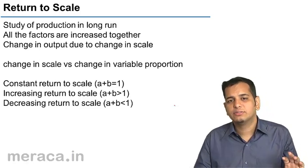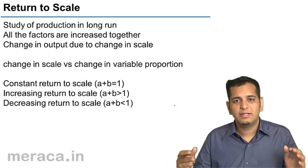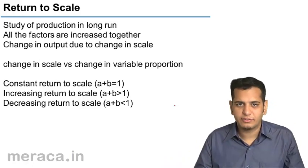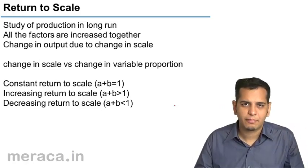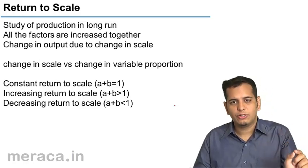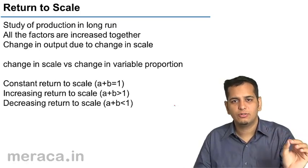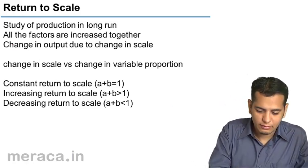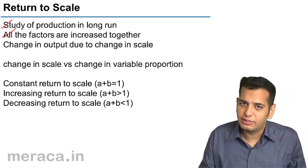There are no factors which are constant. The firm can change the level of any of the factors — be it land, be it labor, or any other factor. In short, the law of variable proportions operates in the short run, and the law of returns to scale operates in the long run, wherein all the factors can be increased or decreased together.